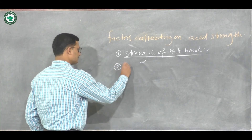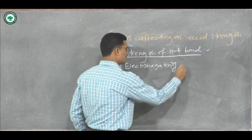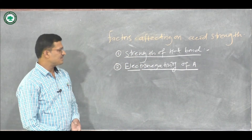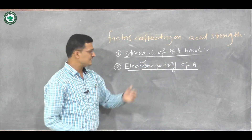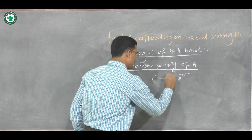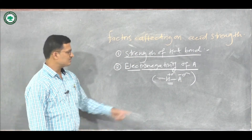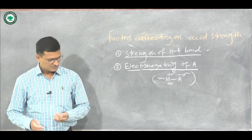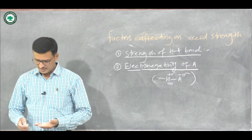The second factor is the electronegativity of A. When the electronegativity of A increases, the formal positive charge on hydrogen increases, making the acid stronger. So higher electronegativity of A leads to increased acid strength.